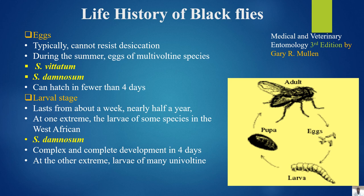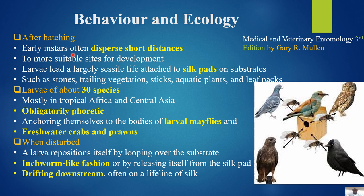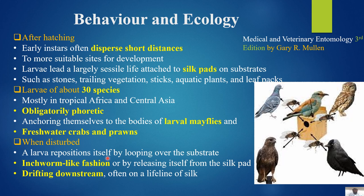Behavior and ecology: after hatching, early instars disperse short distances to more suitable development sites. Larvae lead largely sessile lives attached to silk pads on the substrate, such as stones, trailing vegetation, aquatic plants, and leaf packs. Larvae of about 30 species — mostly in tropical Africa and Central Asia — are obligate phoretics, attaching themselves to the bodies of larval mayflies and freshwater crabs and prawns. When disturbed, a larva repositions itself by looping over the substrate in an inchworm-like fashion, or by releasing itself from the silk pad and drifting downstream, often on a lifeline of silk.